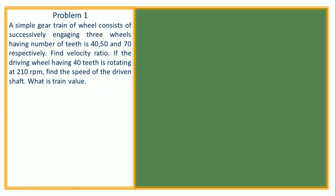Let's consider problem number one. A simple gear train consists of successively engaging three wheels having numbers of teeth 40, 50, and 70 respectively. Find the velocity ratio if the driving wheel having 40 teeth is rotating at 210 RPM. Find the speed of the driven shaft and what is the train value. Let's try to understand the problem — this is a simple gear train.